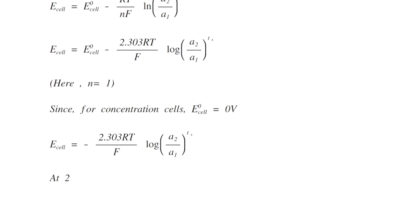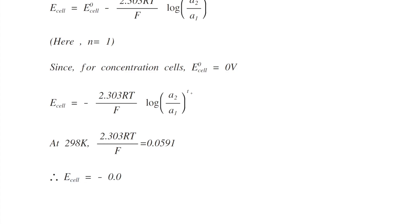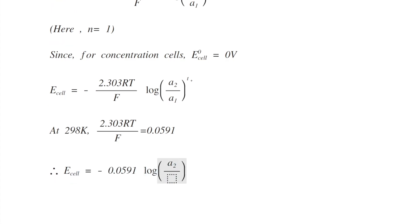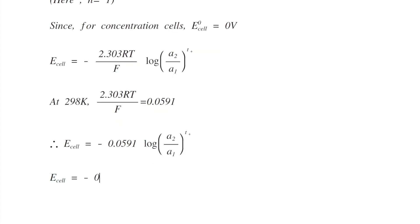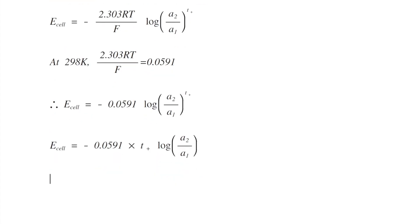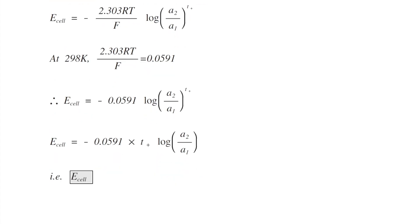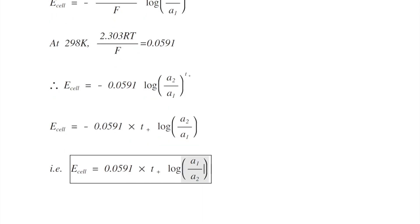At standard conditions, i.e., 298 K, 2.303RT/F equals 0.0591. Substituting this value: E_cell = −0.0591 log(A2/A1)^T+. Taking the power out of the log: E_cell = −0.0591 × T+ × log(A2/A1). Inverting A2/A1 to remove the negative sign: E_cell = 0.0591 × T+ × log(A1/A2).